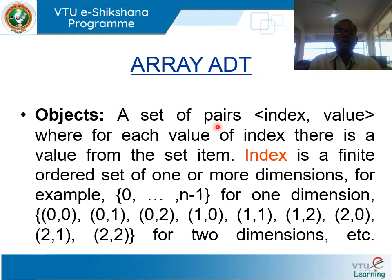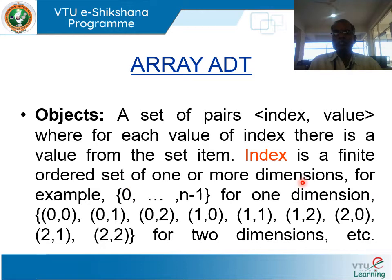An array as an abstract data type has objects defined as a set of pairs: index and value. For each value of index, there is a value from the set item. The index is a finite ordered set of one or more dimensions. For example, it is 0, 1, 2 up to n minus 1 for one dimension.